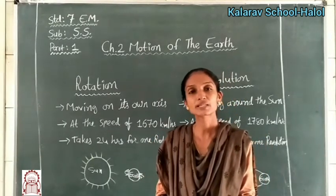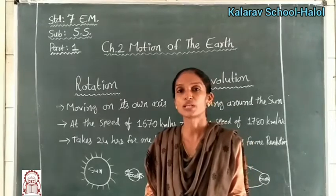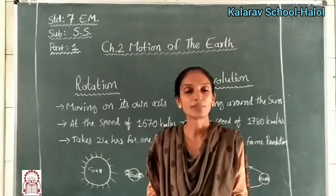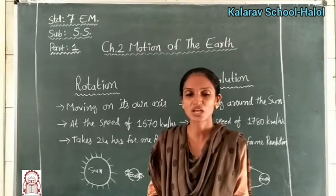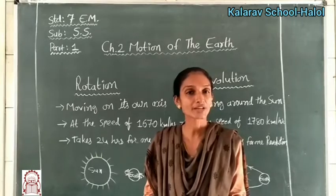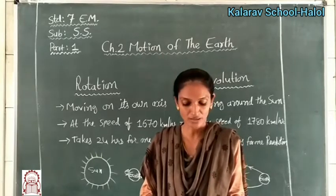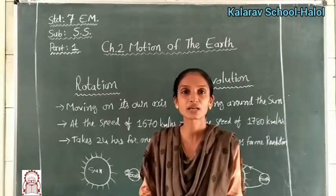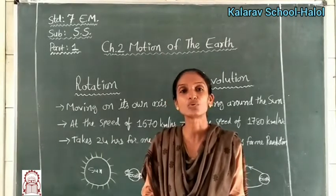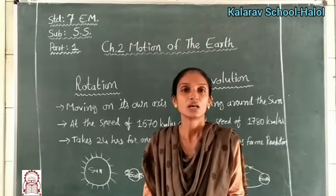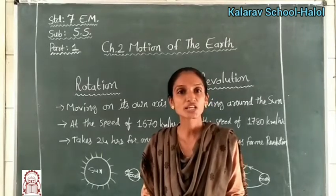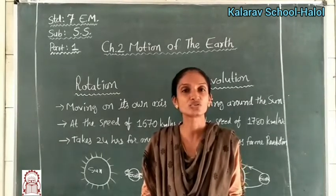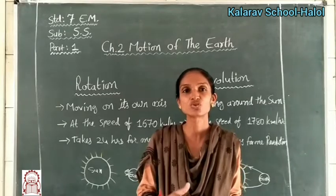If we divide the earth, the side facing the light will be day and the opposite side will be night. You can see this through an activity where you put a torch on one side — the lit side represents day and the other side represents night.